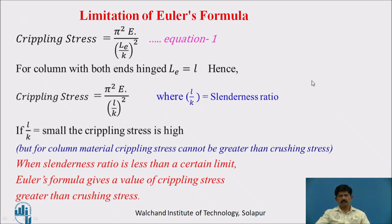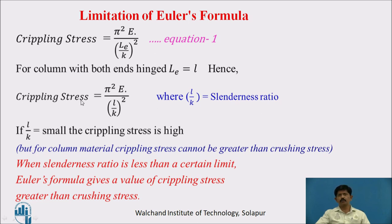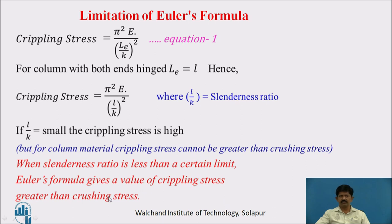Limitation of Euler's formula: Euler's formula is given as π²E / (L_eff/k)². Considering both ends hinged, L_eff = L, so crippling stress = π²E / (L/k)². If L/k is small, the crippling stress becomes very high — it may even exceed the crushing stress. However, for a material, the crippling stress cannot be greater than the crushing stress. So when the slenderness ratio is less than a certain limit, Euler's formula gives a crippling stress greater than the crushing stress, which cannot be accepted.